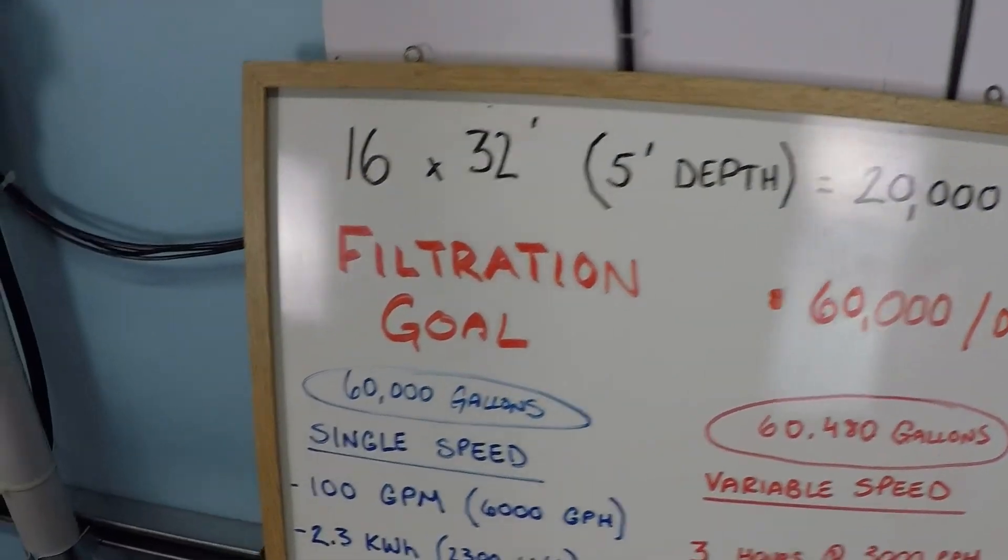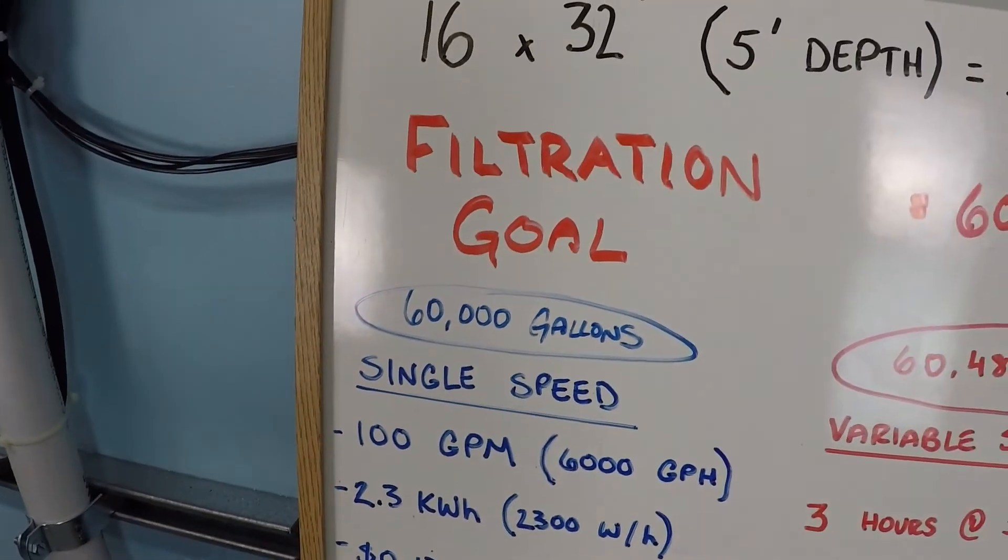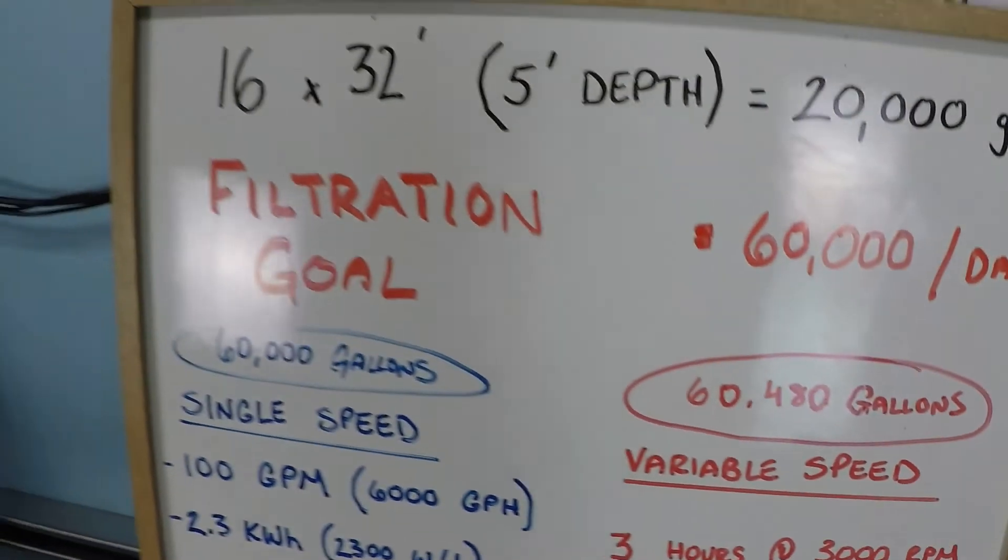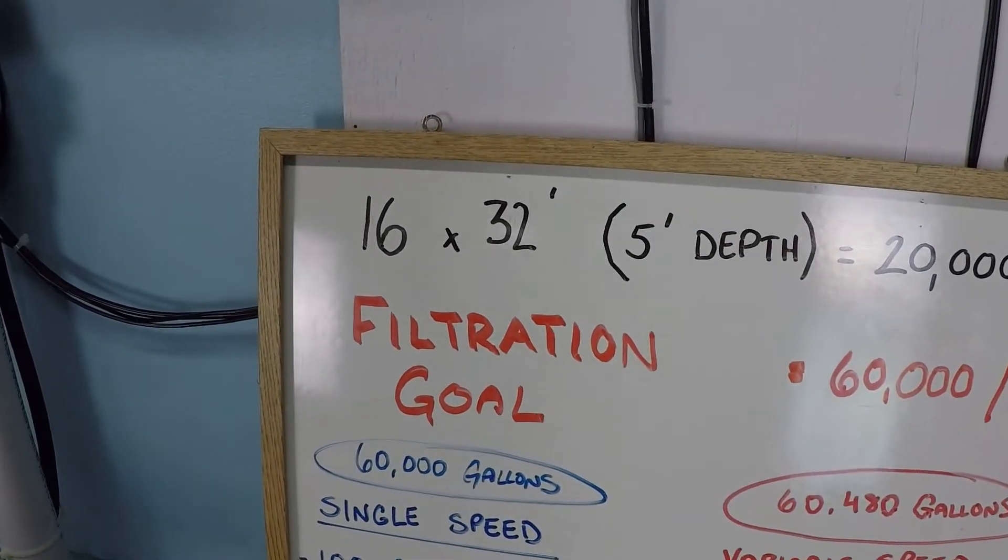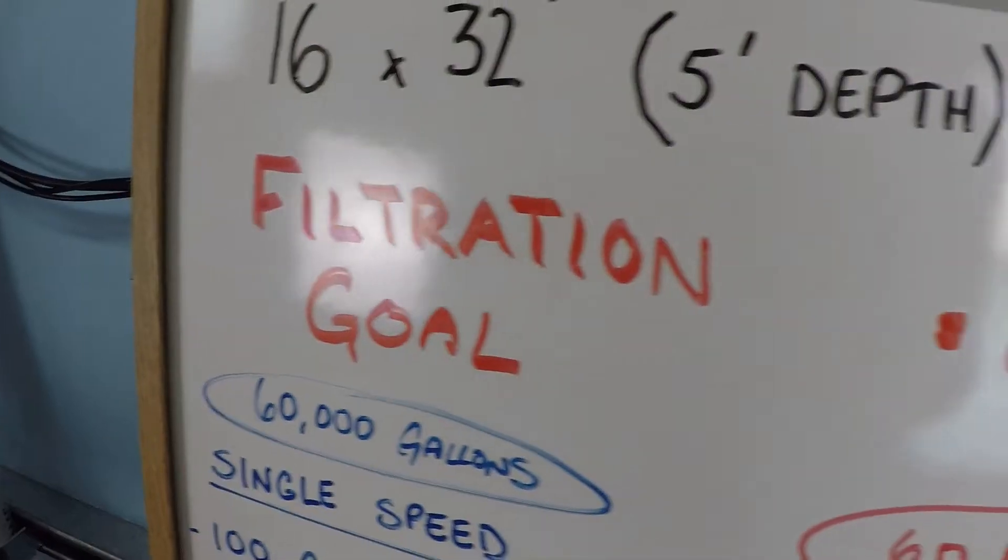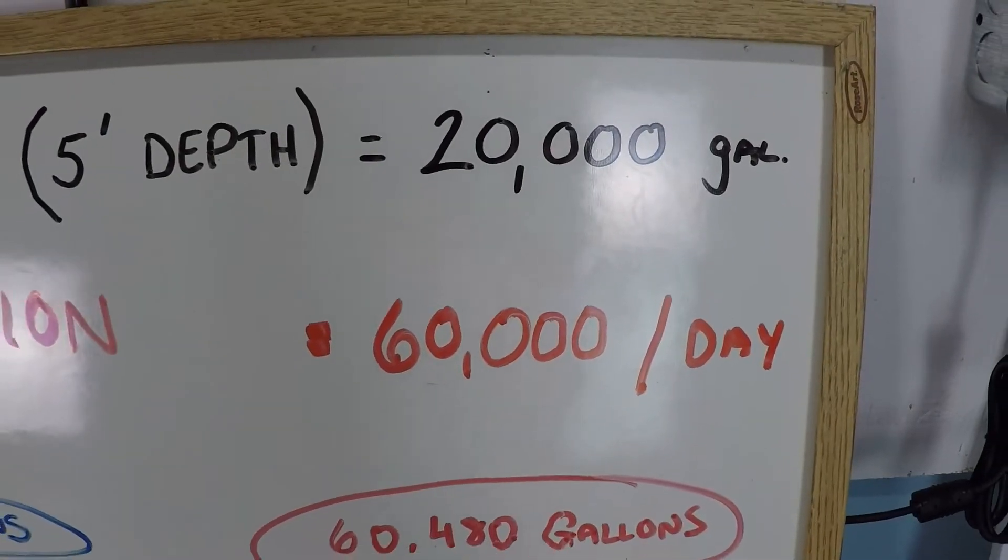Now what we're going to be looking at is a single speed pump and an operating schedule for it compared to a variable speed pump and an operating schedule for that. The first thing that we need to look at is the filtration goal, and in this case it's going to be 60,000 gallons per day.